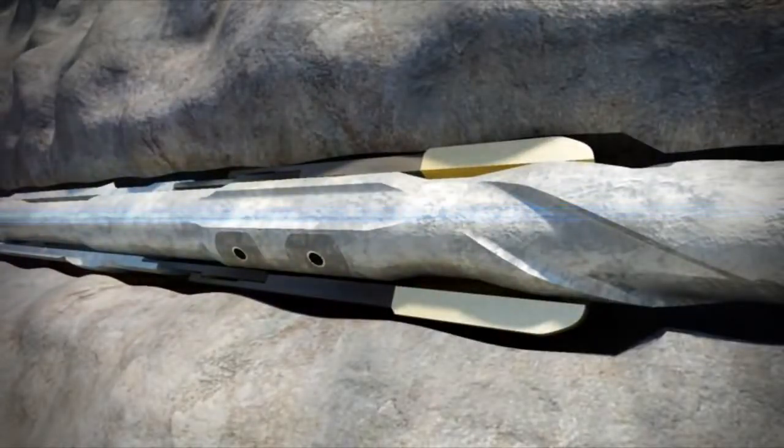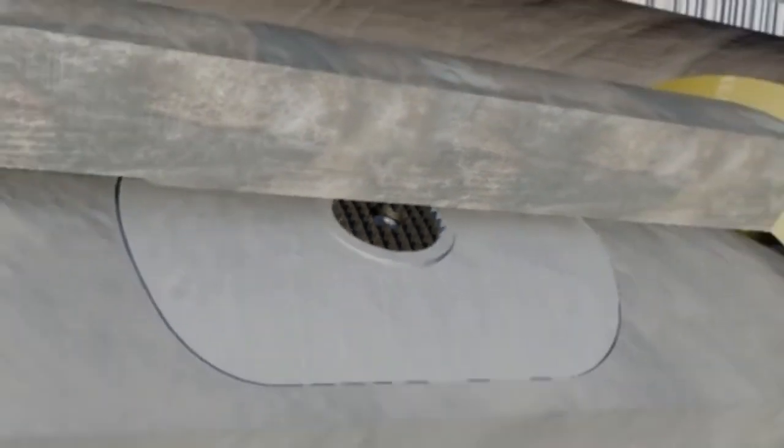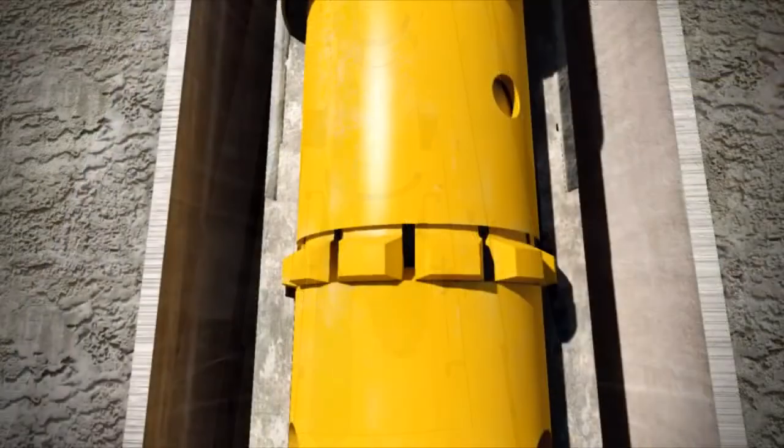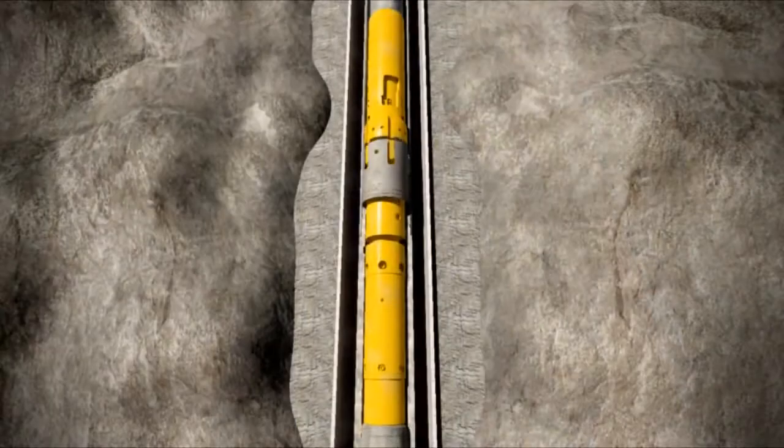Once we reach total depth, we transmit a downlink to the reamer drive sub to deactivate the hydraulic pistons and release the lower part of the system. A ball is dropped to release the HRDE liner setting tool in order to pull out the inner string, leaving the liner in the hole.